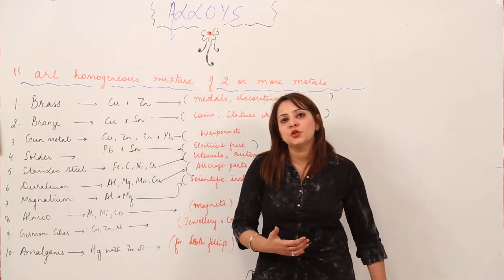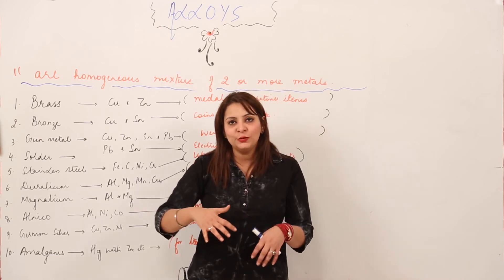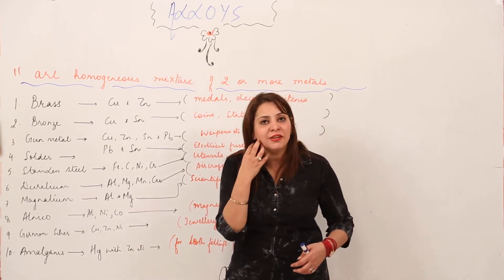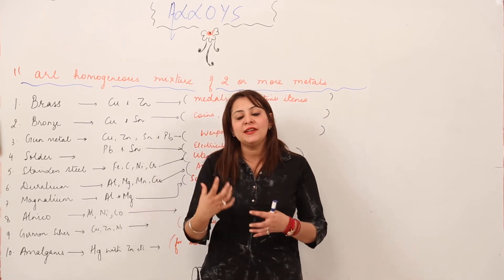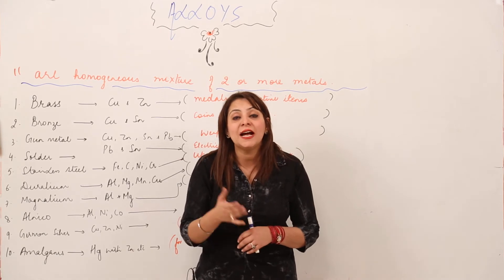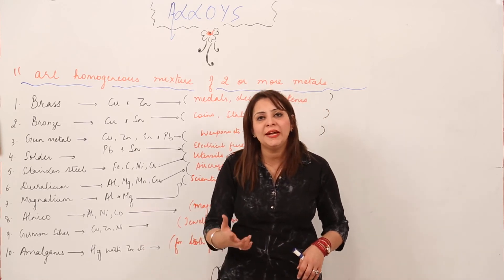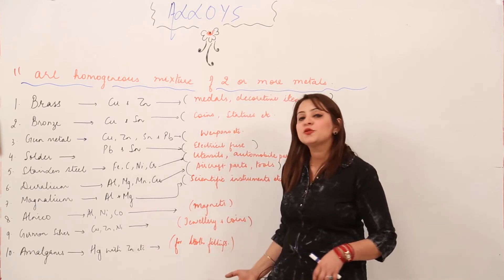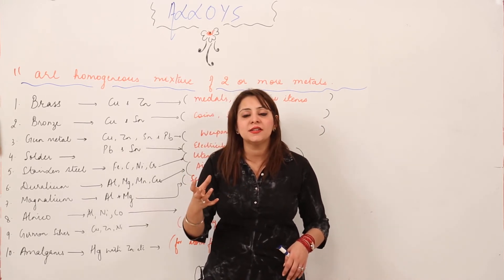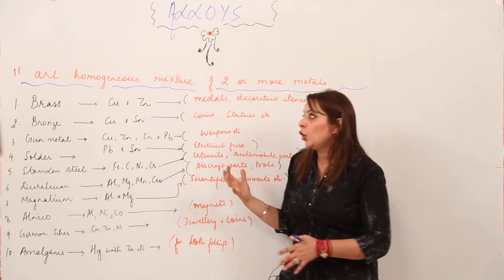Next is amalgam. You have actually seen amalgam — when you eat sweet substances and get cavities in your teeth, you go to the dentist who fills the cavity with a white-colored substance. That substance is amalgam, which is an alloy of mercury usually alloyed with zinc or sodium-like metals. It is used by dentists for tooth filling to prevent attack by microorganisms.